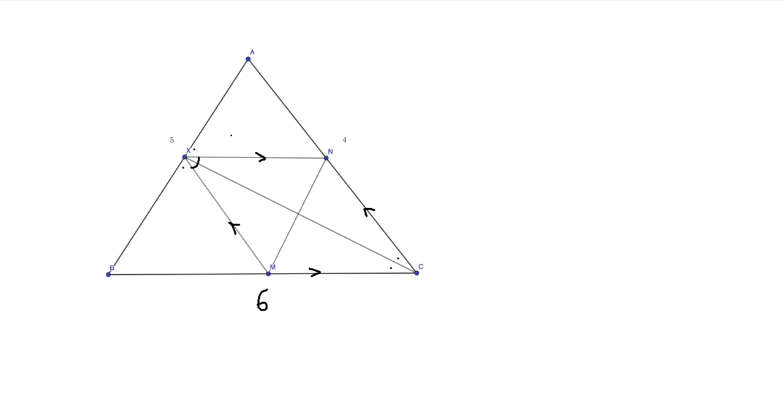We can use the angle bisector theorem here to compute the lengths AX and BX, which are 2 and 3, because the ratio 2 to 4 has to equal the ratio 3 to 6, which it does.